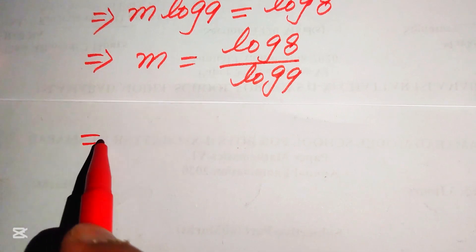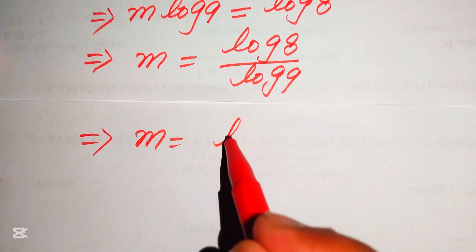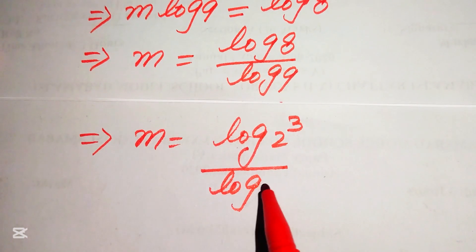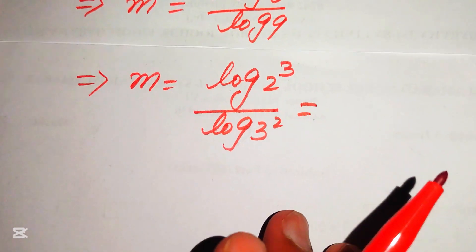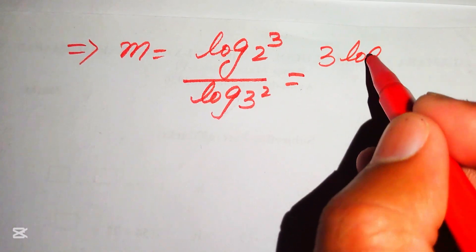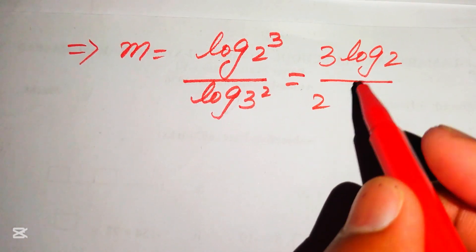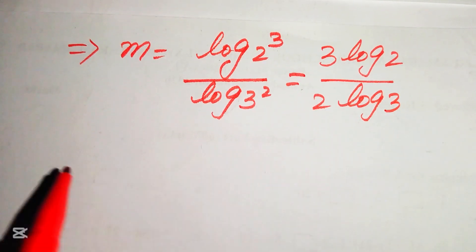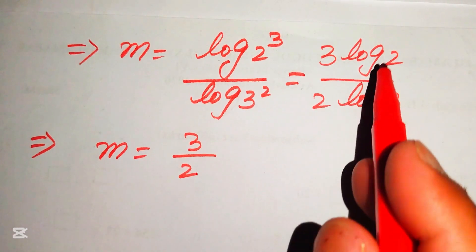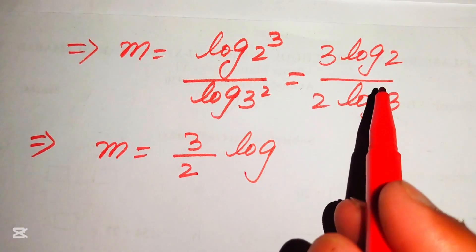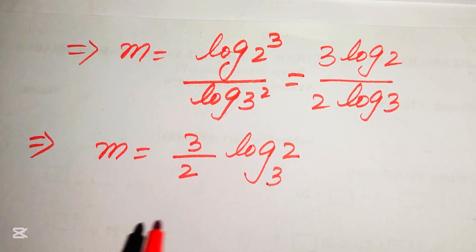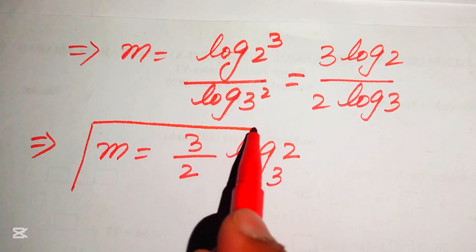To simplify, we write 8 as 2 cubed and 9 as 3 squared, then apply the log power rule. This gives m equals 3 times log 2 divided by 2 times log 3, which simplifies to m equals 3 over 2 times log 2 over log 3. Applying the change-of-base property, log 2 over log 3 equals log base 3 of 2, so the final value is m equals 3 over 2 times log base 3 of 2.